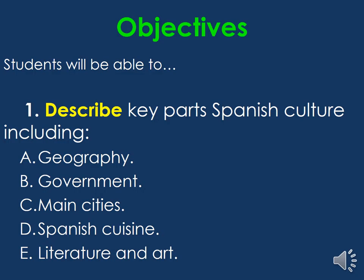In today's lesson, the students will be able to describe the key parts in Spanish culture, including the geography, the government, the main cities, the Spanish cuisine, literature, and art, and also the religion. Make sure that you put the title on the next section so you know what we're talking about. These are required notes. Make sure that if you have any questions, go back at any time during the video.